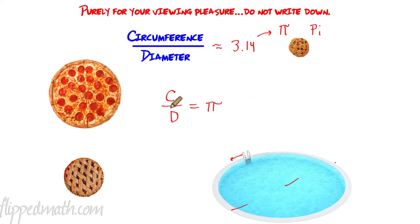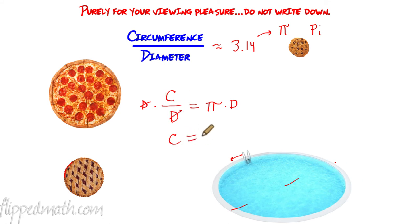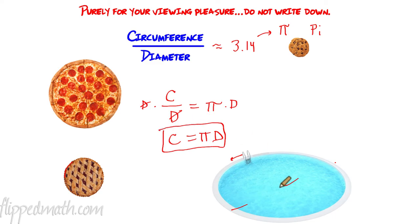So the circumference divided by the diameter for any circle equals pi. Now I'm going to do a little algebra — multiply both sides by D. The D's cancel, and we get: circumference equals pi times the diameter. That is our first formula. Now if I take the diameter and multiply it by pi — this 3.14 — I will get the circumference.